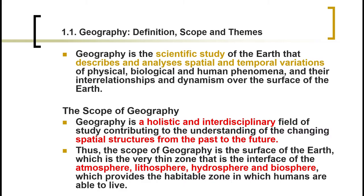The basic concerns also include biological aspects like vegetation — how they are distributed spatially and temporally over the earth surface. And again, the relationships human beings have with respect to the physical and biological phenomena of the earth must be under consideration. So geography is defined as a scientific study of the earth that analyzes and describes the spatial and temporal variations of the physical and biological phenomena with respect to their interrelationships and interactions with human beings.